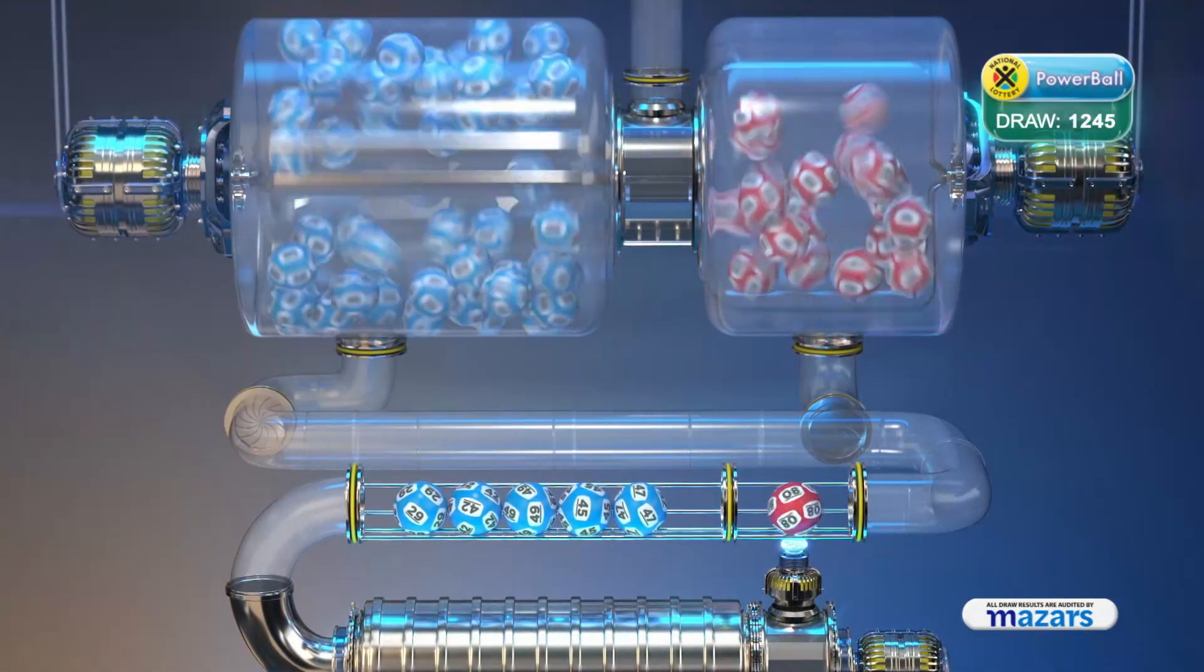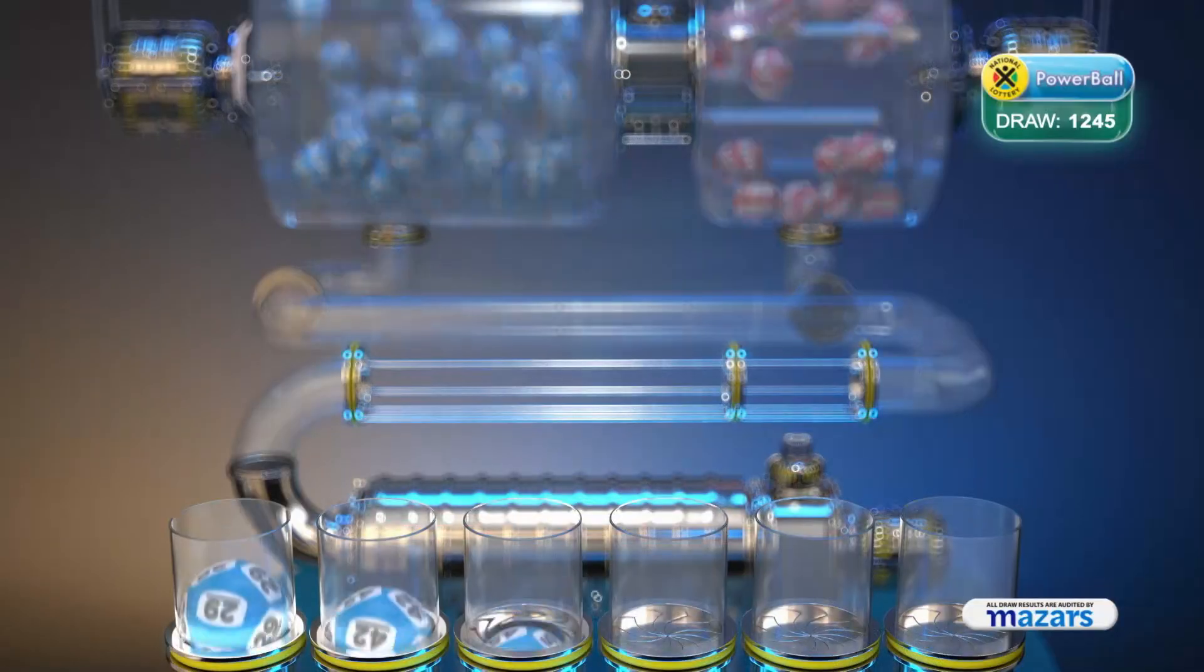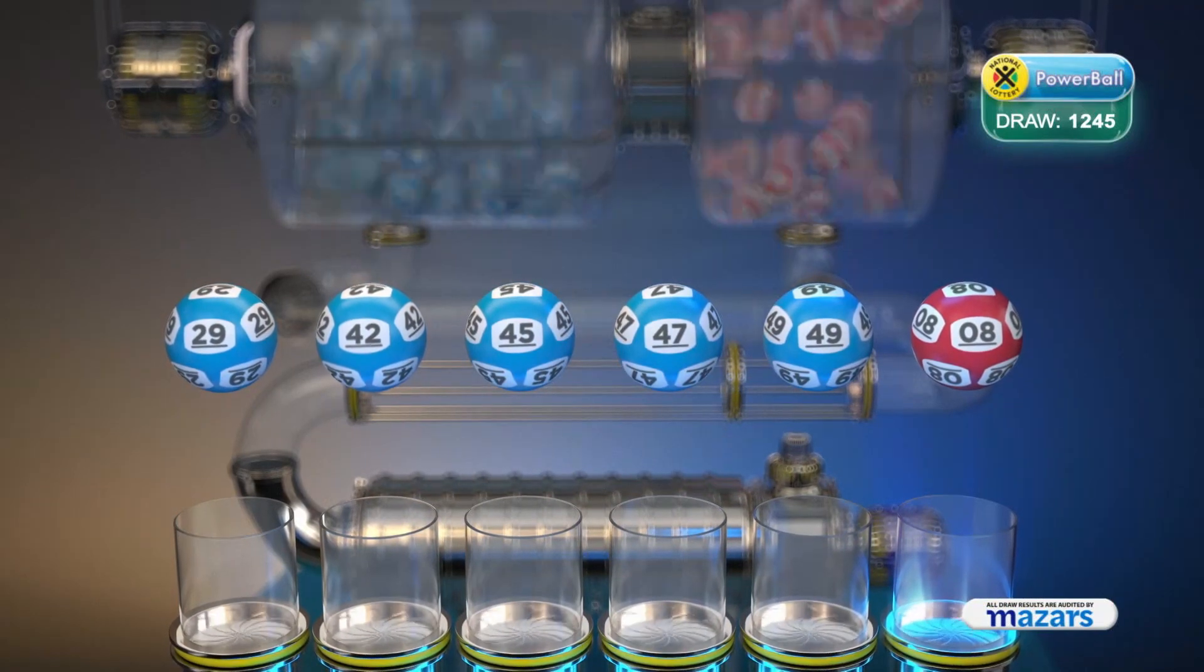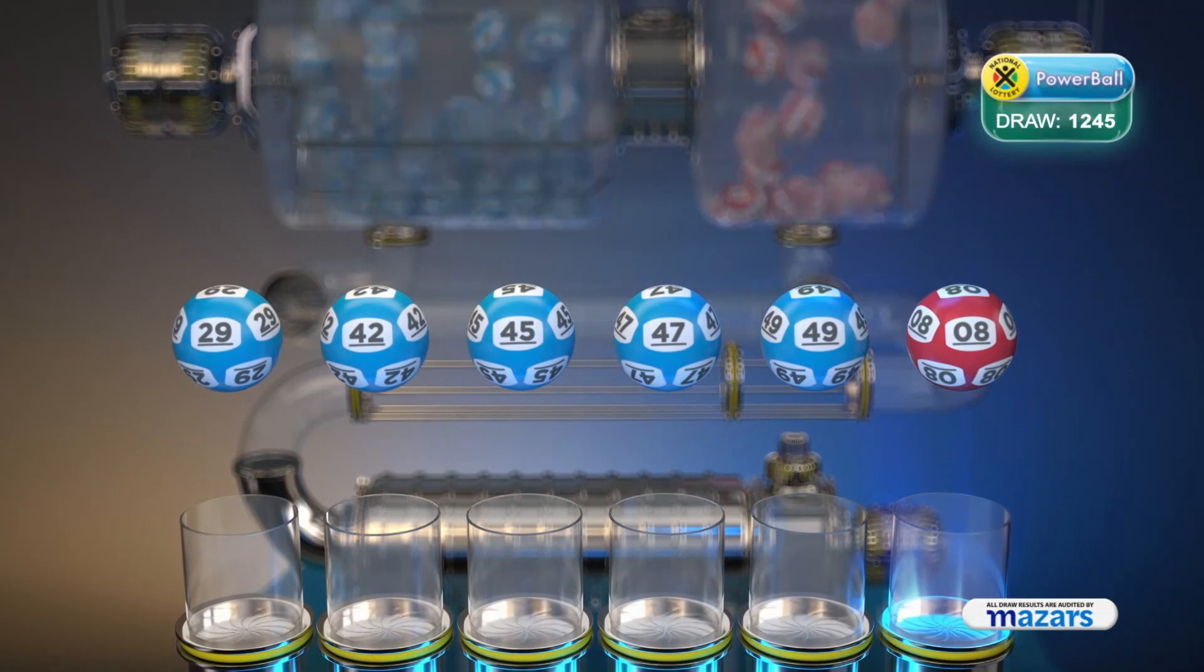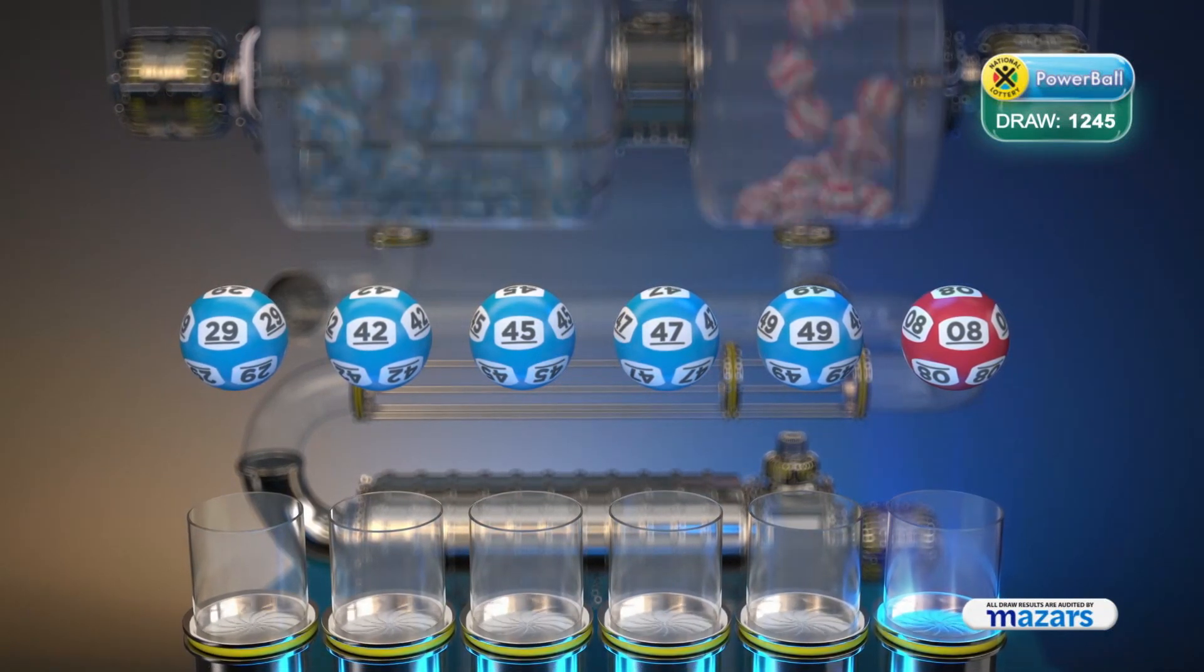And the Powerball is 8. Let's recap these numbers in numerical order. 29, 42, 45, 47, 49. And the Powerball is 8.